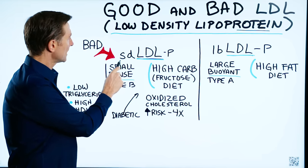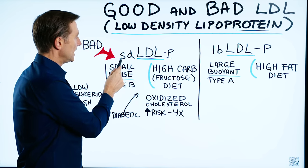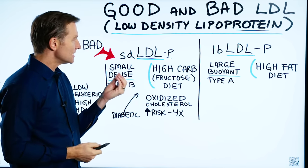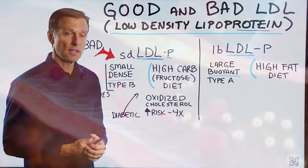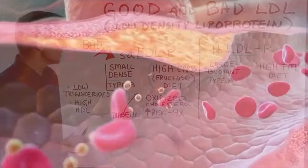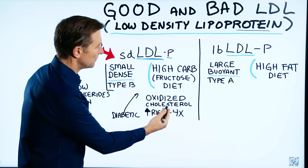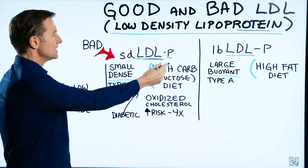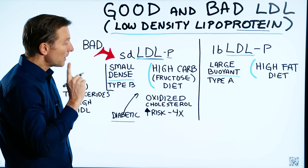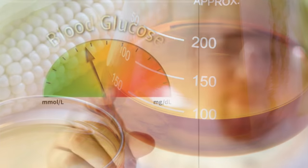Here are the two types. The first is SD LDL-P — SD stands for small, dense, and P stands for particle. This is the smaller, denser type of LDL, and it's the real bad one. It can invade the arteries deep into the tissues and create all sorts of problems. It has oxidized cholesterol, which increases your risk of heart attack by four times. This is the type you normally see with diabetics because it comes from a high-carb diet, especially high amounts of fructose — fructose creates more of this than glucose.